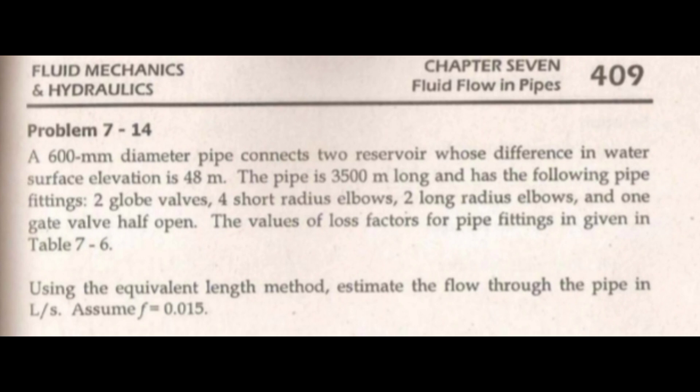A 600-millimeter diameter pipe connects two reservoirs whose difference in water surface elevation is 48 meters. The pipe is 3500 meters long and has the following pipe fittings: 2 globe valves, 4 short radius elbows, 2 long radius elbows, and one gate valve half open.